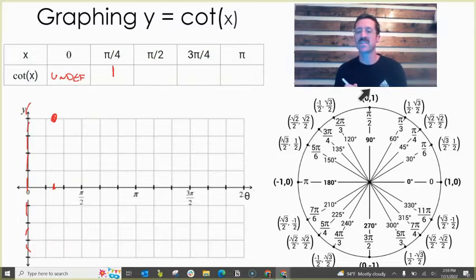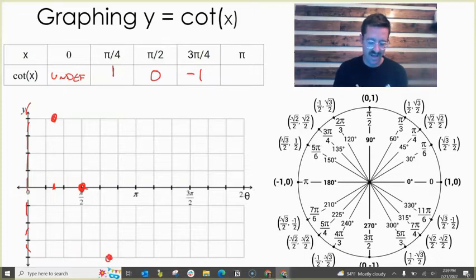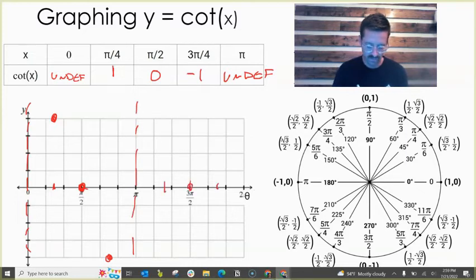Then at π over 2, x divided by y is now zero. This was an asymptote for tangent, but it's a zero for cotangent. At 3π over 4, x divided by y is something divided by itself, but we have a negative divided by a positive, which makes a negative. At π, we have another asymptote because negative one divided by zero is undefined. And this pattern would just repeat.